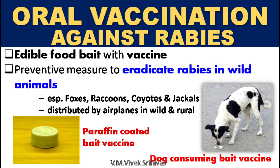Oral Vaccination Against Rabies. This is done to prevent and eradicate rabies in wild animals such as foxes, raccoons, coyotes and jackals. The vaccine is mixed with edible food and used as a bait vaccine. These bait vaccines are distributed by airplanes in wild and rural areas. The left picture shows the paraffin-coated edible food bait vaccine, and the right one shows the dog consuming the bait vaccine.